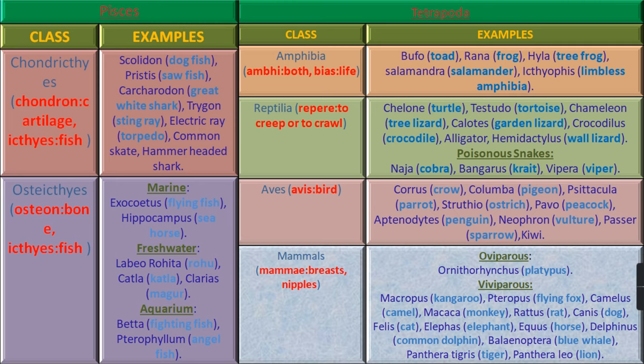Class Aves — where Avis means Birds. Examples are Corvus (Crow), Columba (Pigeon), Psittacula (Parrot), Struthio (Ostrich), Pavo (Peacock), Aptenodytes (Penguin), Neophron (Vulture), Passer (Sparrow), and Kiwi.